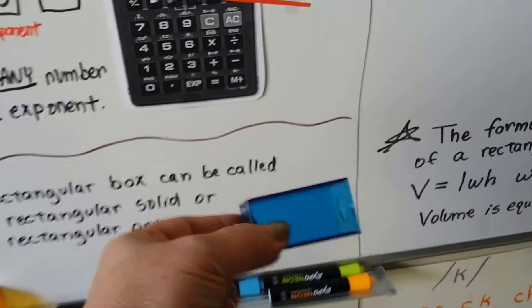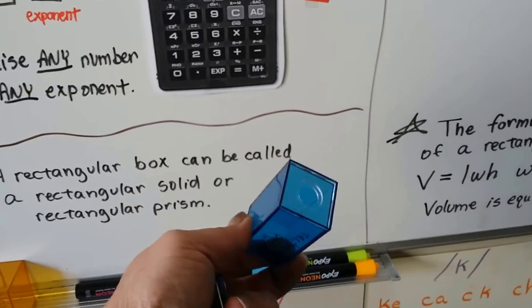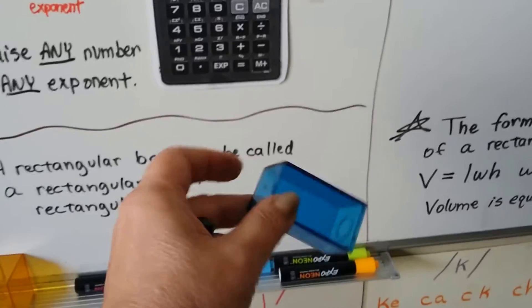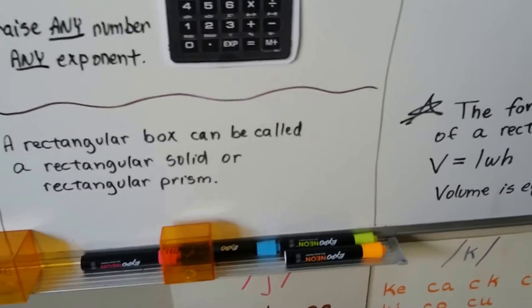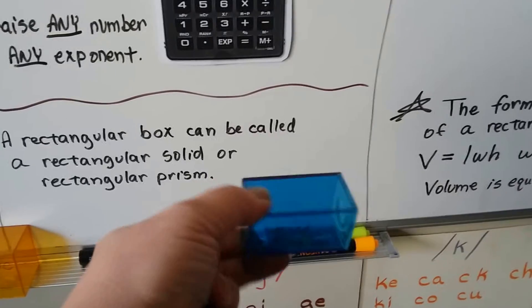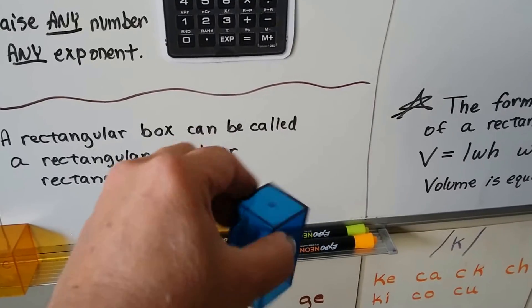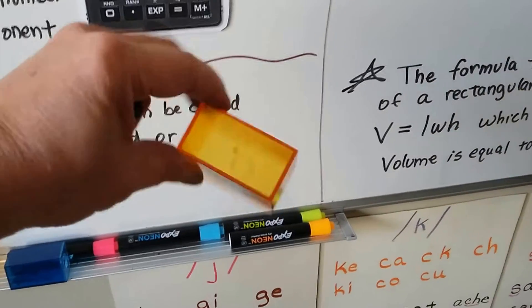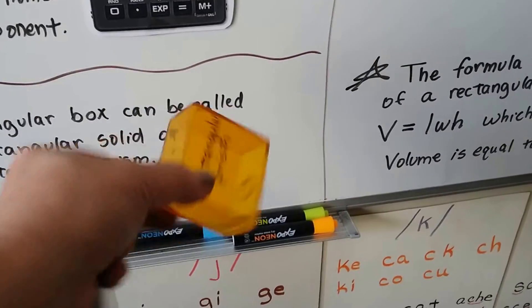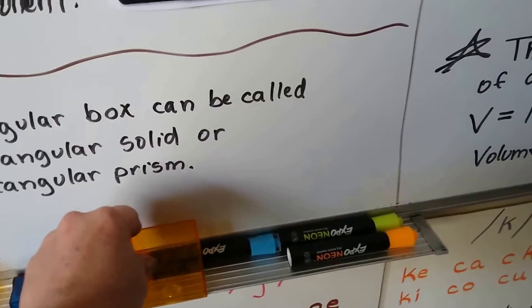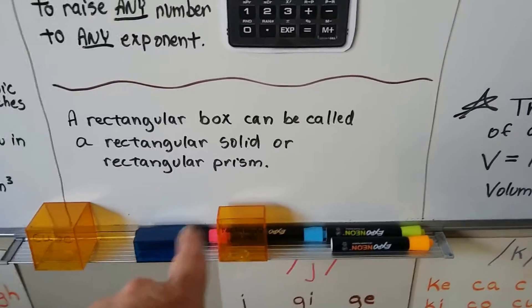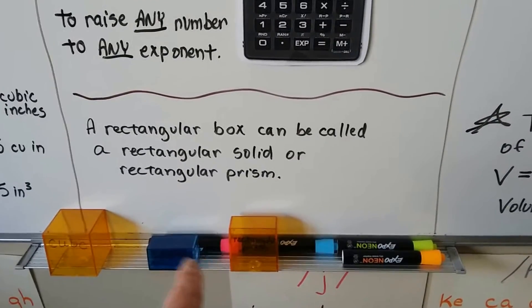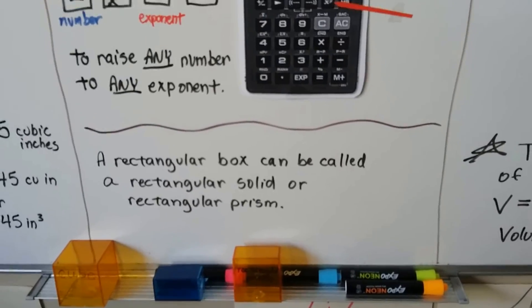This is a rectangular prism, and if it was completely filled inside, it would be a rectangular solid. And this is also a rectangular prism. That's a 3D object. When we can find the area of the outside, we can also find the volume of the inside.